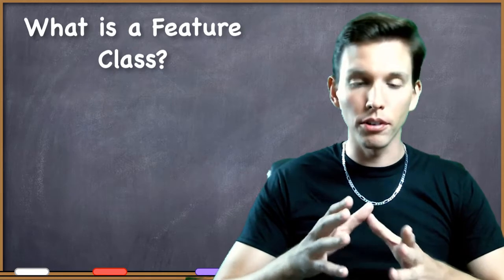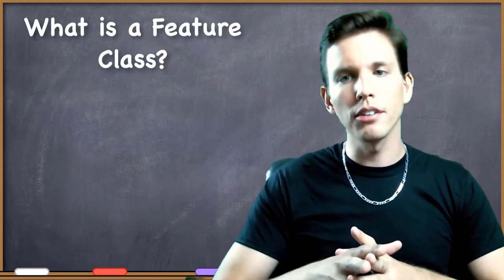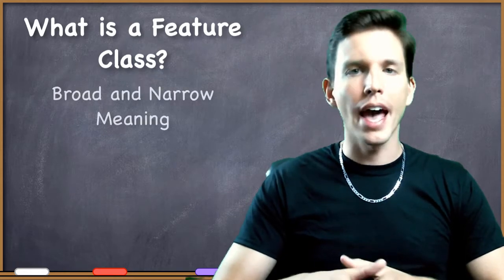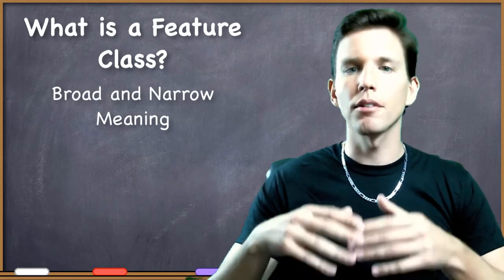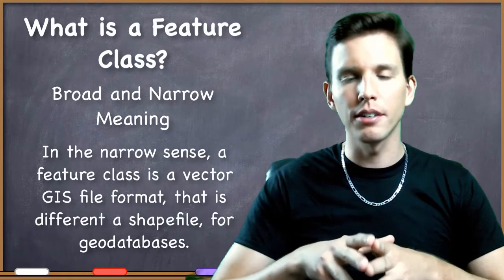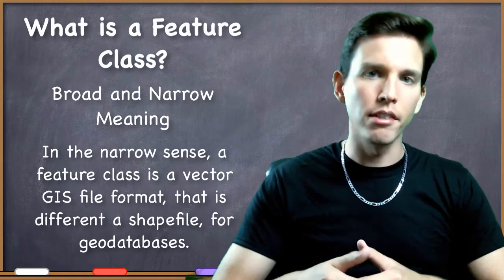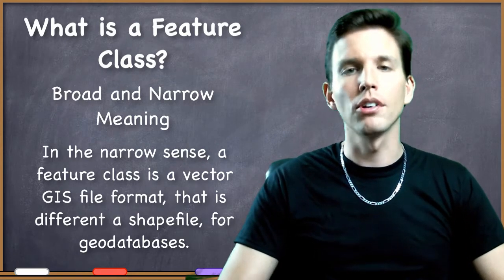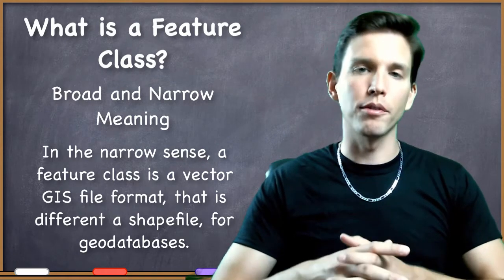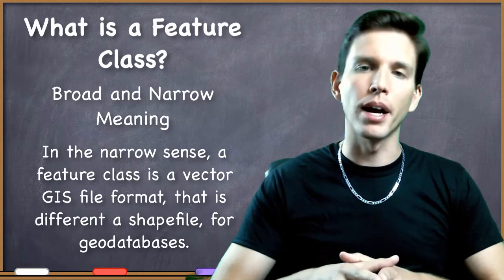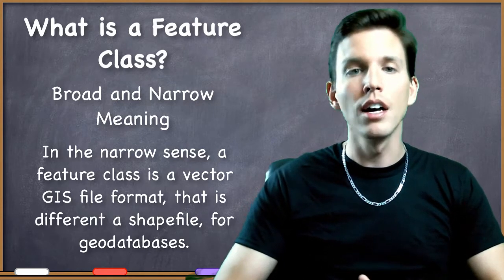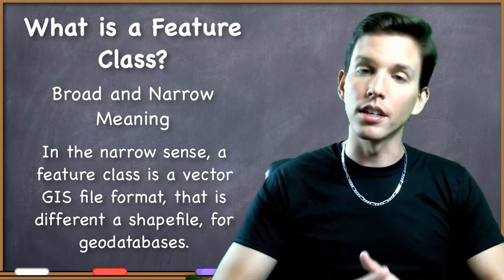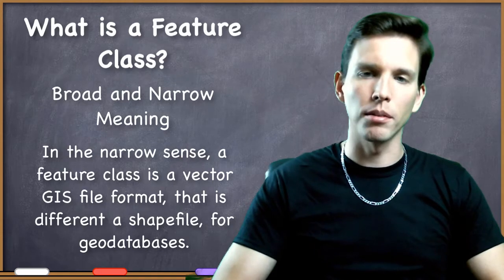We're going to talk about it from two different angles. This term has both a broad meaning and a narrow meaning. According to the narrow meaning, a feature class is a specific kind of vector data format that is different from a shapefile, which we can use when constructing geodatabases. We have a variety of different file formats to store vector GIS data, of which a shapefile is just one. A feature class in the narrow sense is another, when talking about geodatabases.